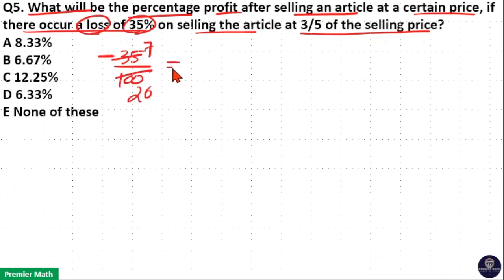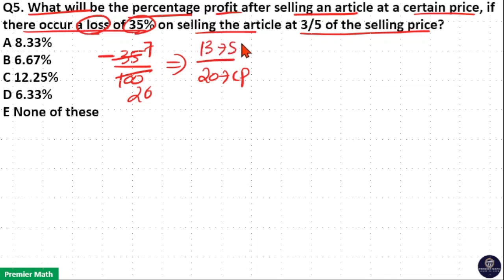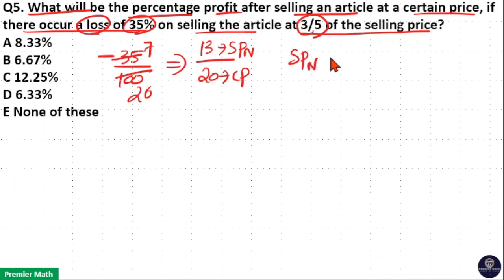This means if 20 parts is the cost price, then 20 minus 7 equals 13 parts is the selling price. But this selling price is 3/5 of the original selling price, so this is the new selling price. If we take the ratio of new selling price to cost price, it is equal to 13:20.